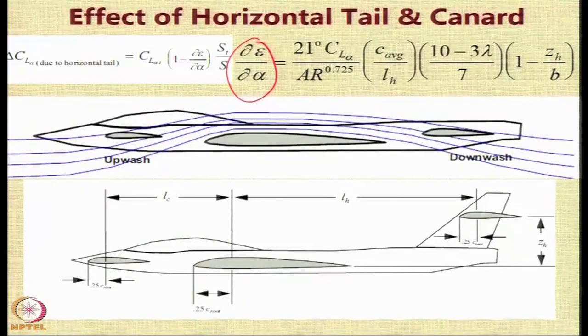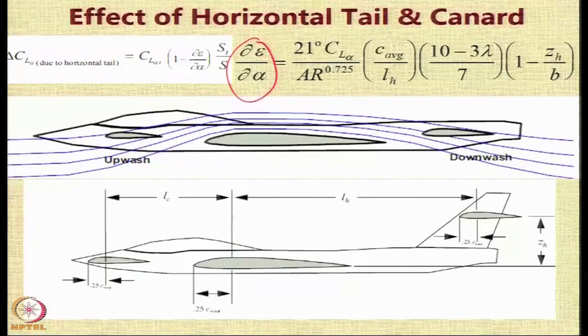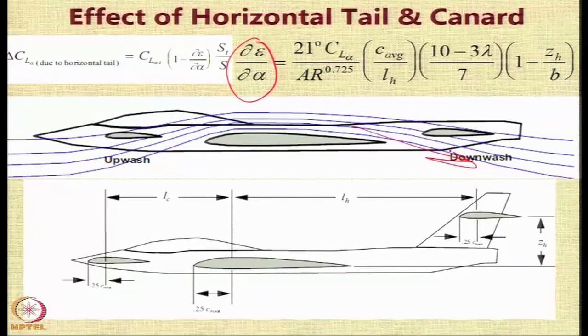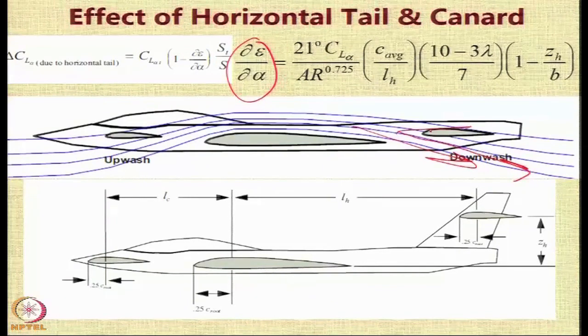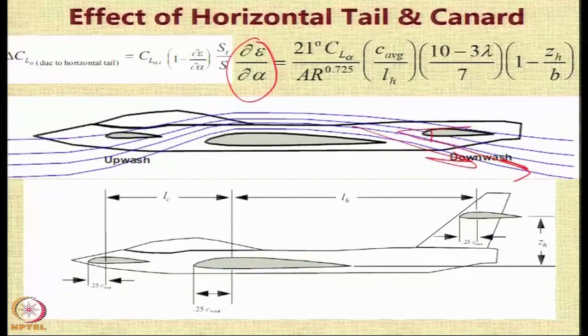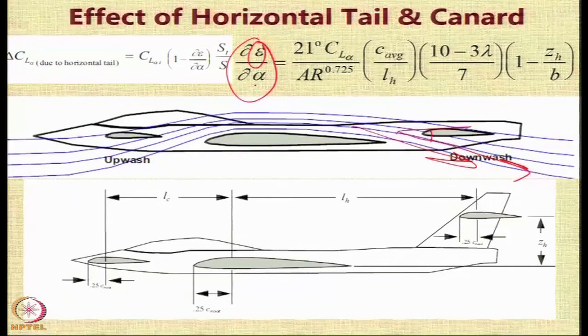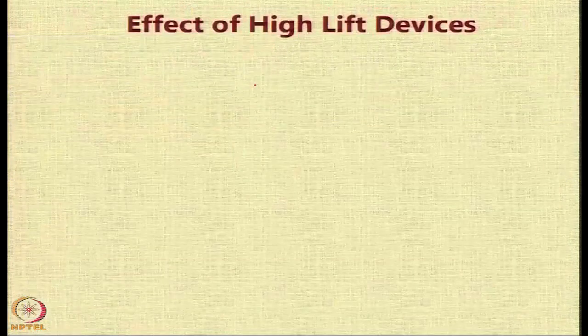This effect is created because there is always a downwash acting behind the wing. And so the angle at which the air comes onto the tail is not the free stream, but there is some kind of a downwash. And this particular downwash angle changes with the angle of attack alpha also.